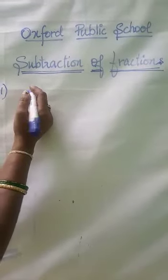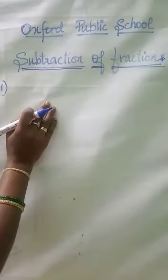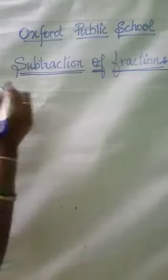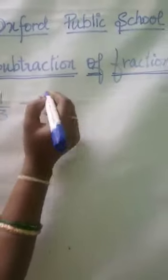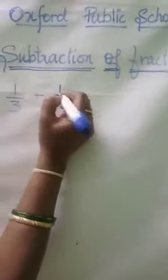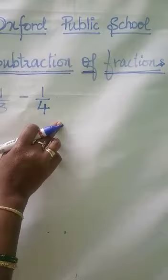Next we are going to see subtraction of fractions. So let us go with an example: 1 by 3 minus 1 by 4. So here also we have different denominators.